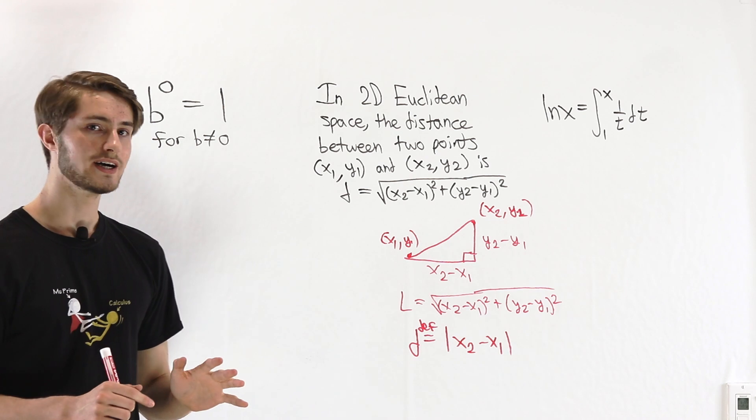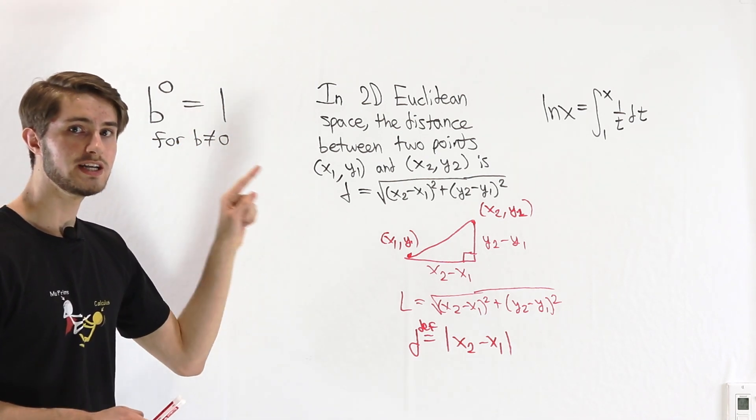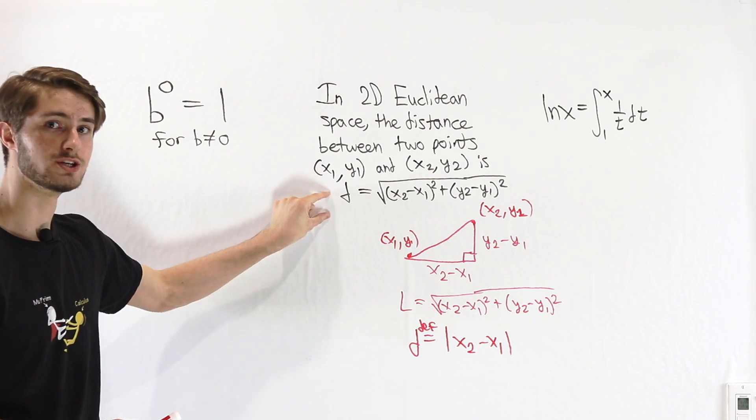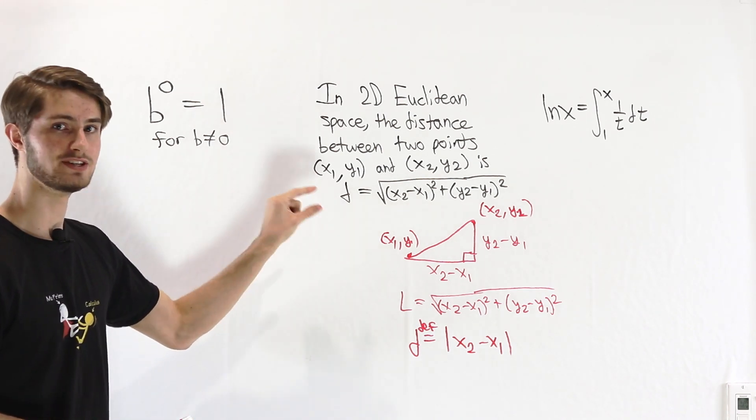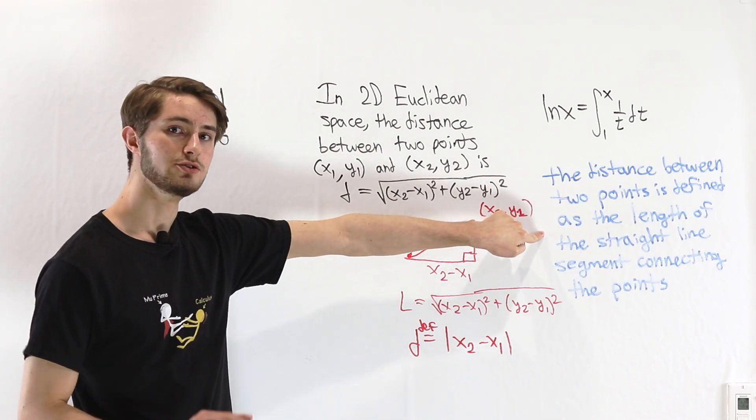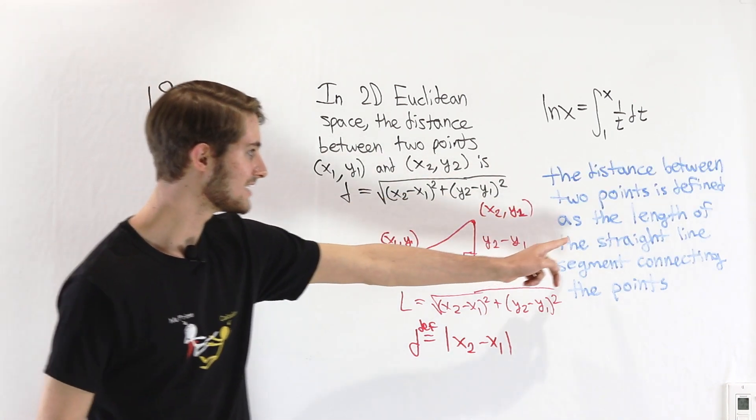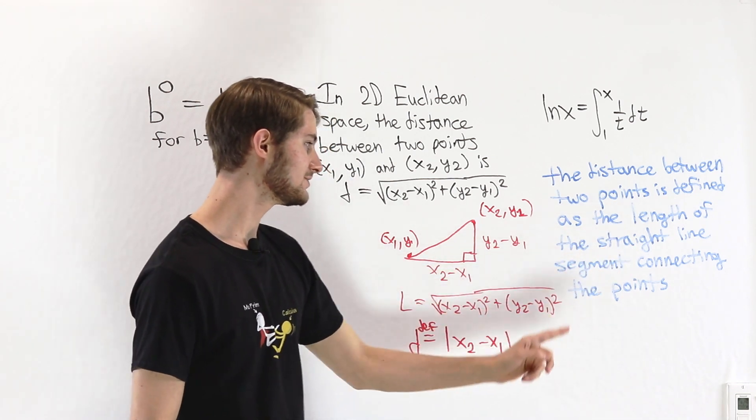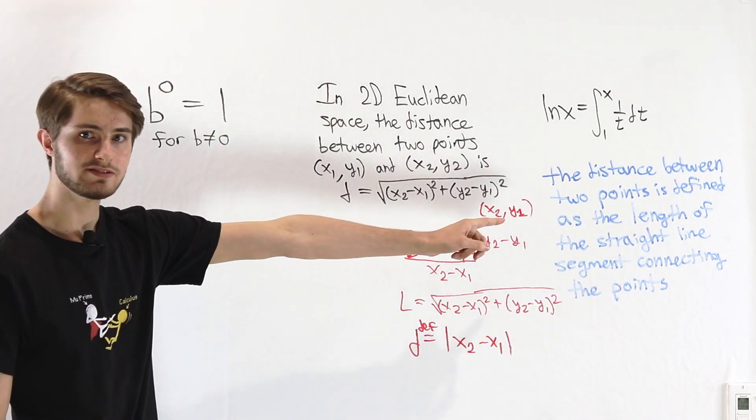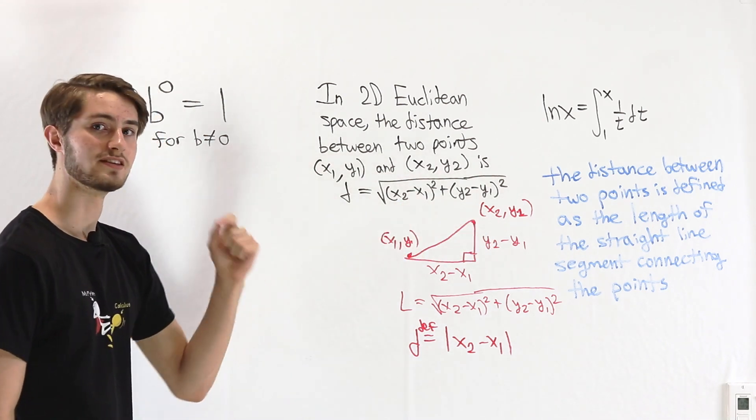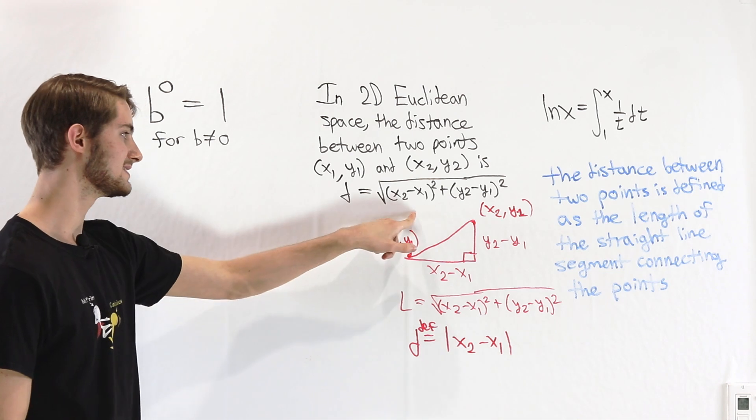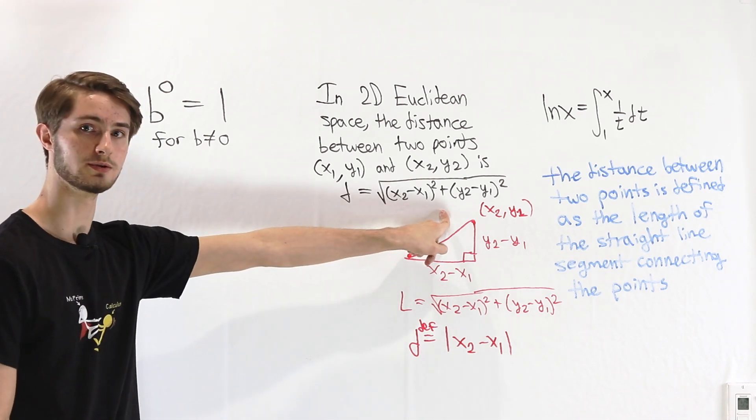Now, the thing to realize is we can actually define Euclidean distance in such a way that this distance equation is a theorem instead of a definition. And that looks like this. We can define two-dimensional Euclidean distance as the length of the straight line segment connecting the two points. And that definition will give us as a theorem, through this Pythagorean theorem application, the distance equation in terms of the square root that we see here.